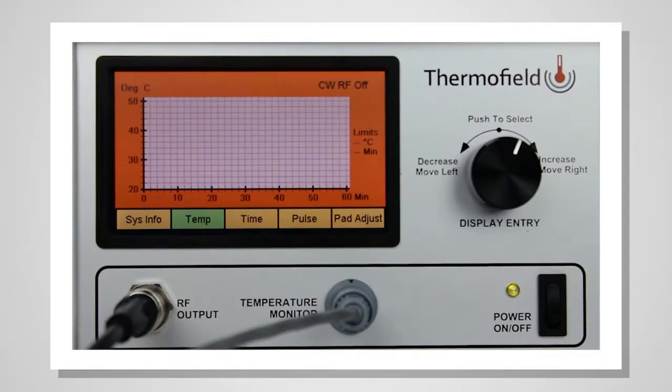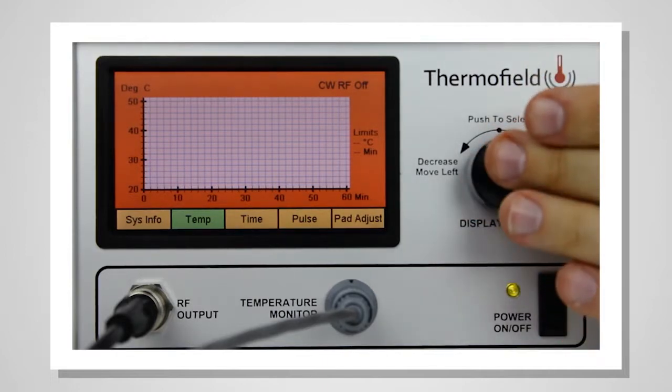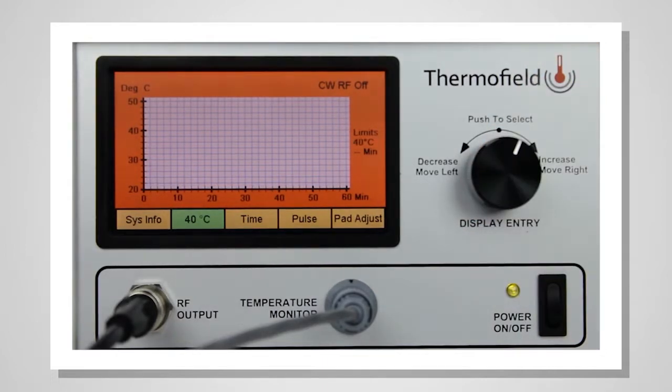The current status of the unit should read CWRF OFF in the upper right-hand corner of the screen. After turning the alarm off, the temp pane will be highlighted in green. Push the display entry knob.